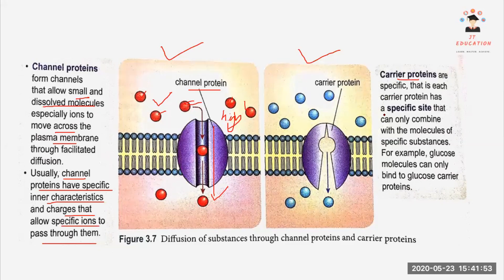Then carrier protein also, it has specific site that binds only with molecules of specific substances. For example, like only glucose can bind to the carrier protein. So glucose will bind to the active site and then after that, it will be removed out.